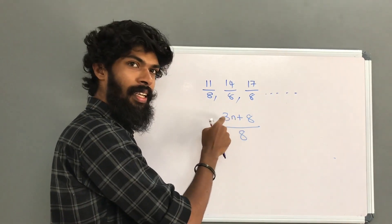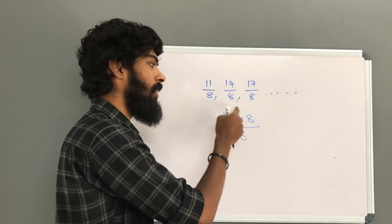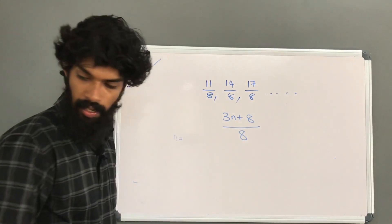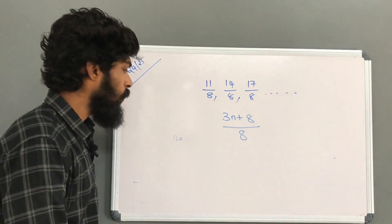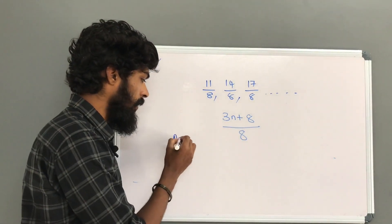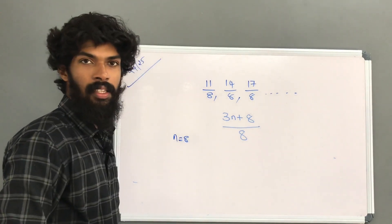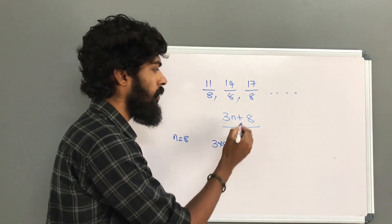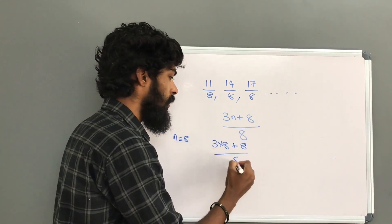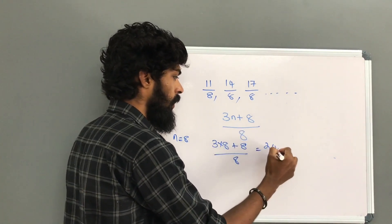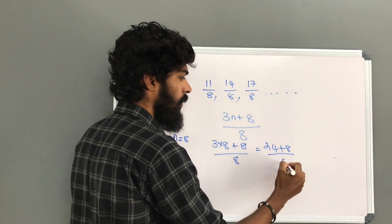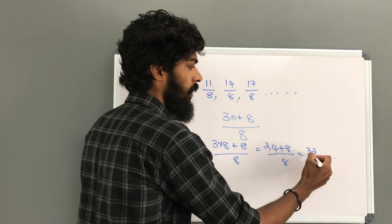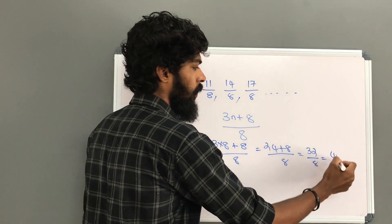Tom 4, Tom 8. n is equal to 8. Answer: n equal to 8; 3 into 8 plus 8, divided by 8 equals 20. Then 24 plus 8 divided by 8; 24 plus 8 is 32, divided by 8 equals 4.